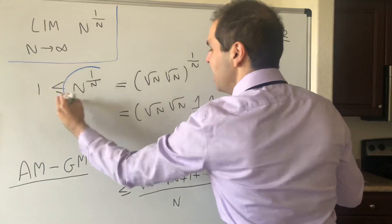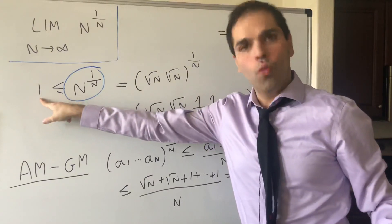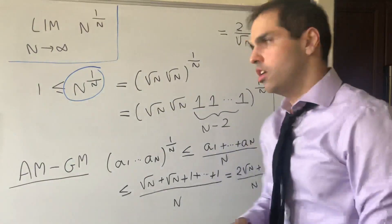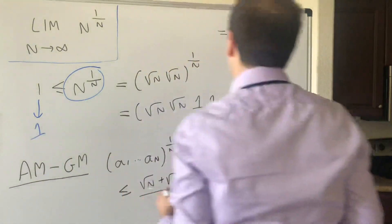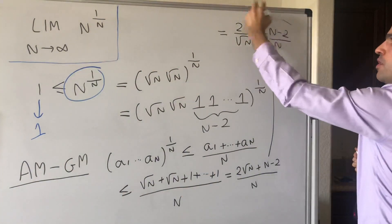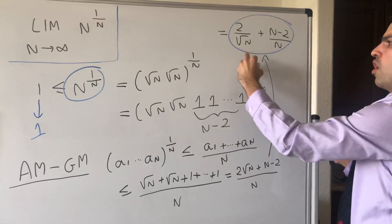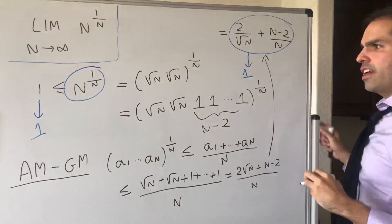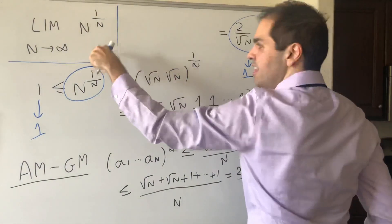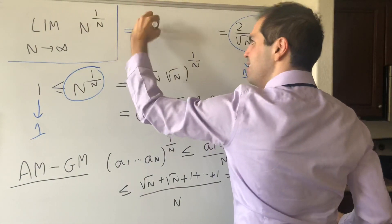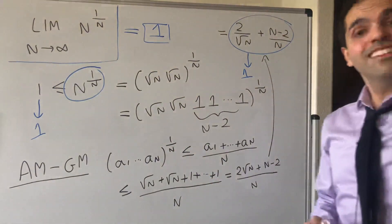So what do we have? n to the 1 over n is squeezed between 1 — which goes to 1 as n goes to infinity — and the term 2 over square root of n plus (n minus 2) over n, which also goes to 1 as n goes to infinity. So by the squeeze theorem, the middle term is also equal to 1. Isn't that neat?